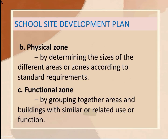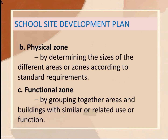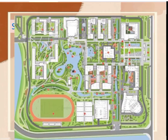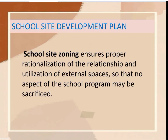And the functional zone is zoning by grouping together areas and buildings with similar or related use or function. An example of functional zoning would be an area with designated zones based on function such as an industrial zone, a recreational zone, and a residential zone. School site zoning ensures proper rationalization of the relationship and utilization of external spaces so that no aspect of the school program may be sacrificed.